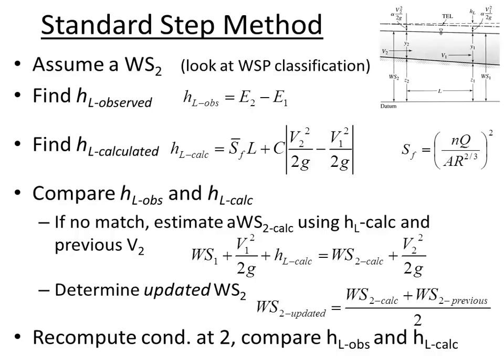Just to review: the standard step method is a balance of total energy rather than specific energy. When comparing section 1 and section 2, we calculate the elevation above some vertical datum to the water surface — those are WS1 and WS2. The big reminder is that 1 and 2 don't mean upstream and downstream here; location 1 is where you know something and location 2 is the unknown where we're solving for depth.